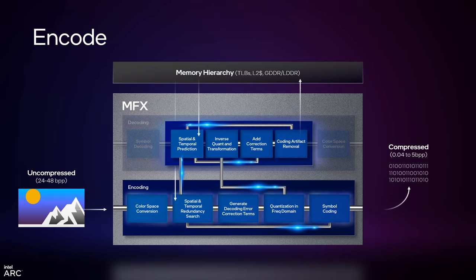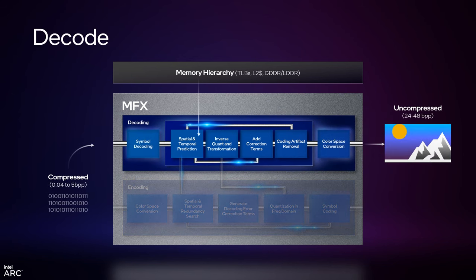During encoding, we do the color space conversion, then the spatial and temporal redundancy search where we look for blocks to replace and generate an instruction stream. We have to calculate the residual — we take all those instructions and send them to our decode block. The decode block generates those P-frames and then does the subtraction with the original frame to calculate the residuals. So our encoder is actually tightly connected to our decoder. We then press that residual through our quantization and symbol coding to get the final output.